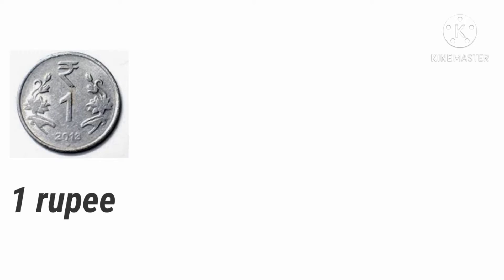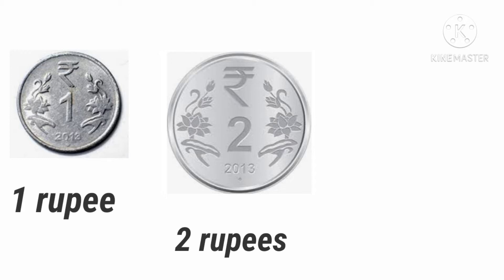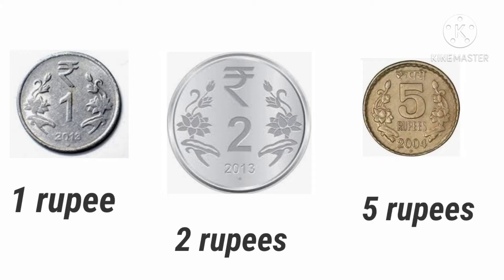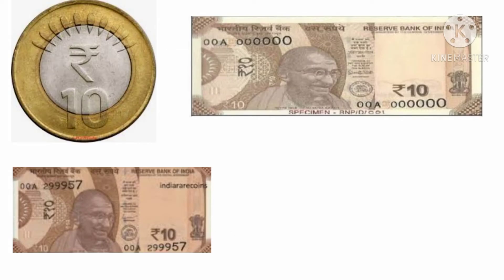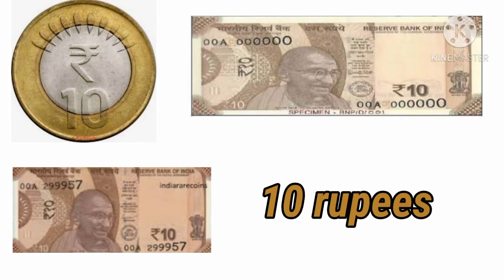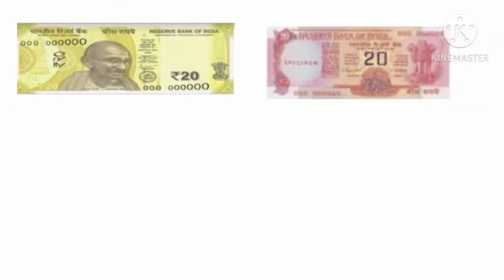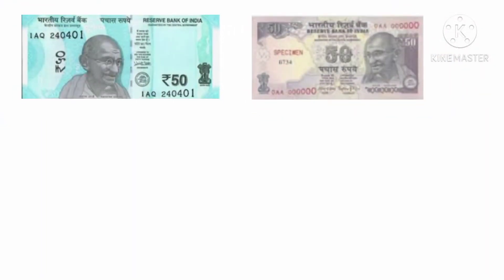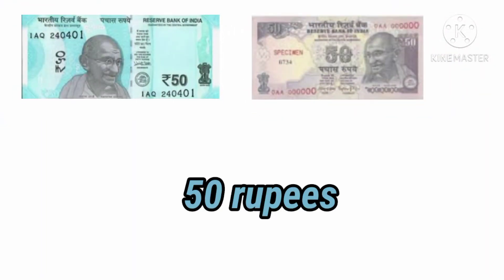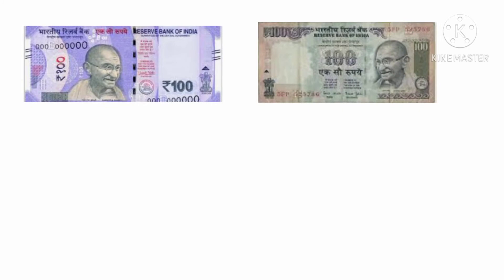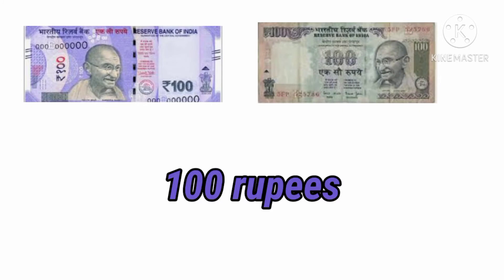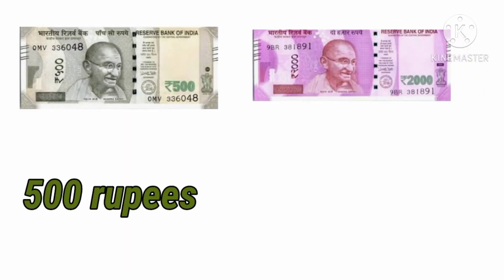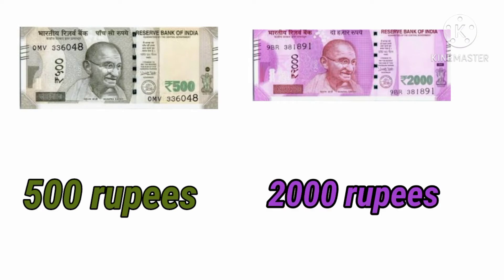This is a 1 rupee coin, 2 rupees coin, and 5 rupees coin. This is 10 rupees. Here is 20 rupees. Now this is 50 rupees. 100 rupees. These are the 500 rupees and 2000 rupees notes.